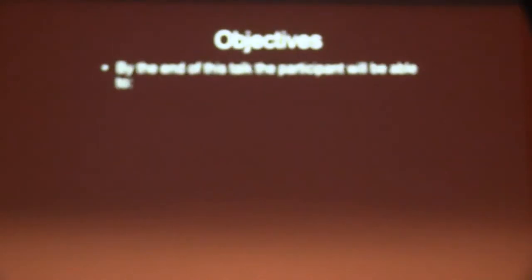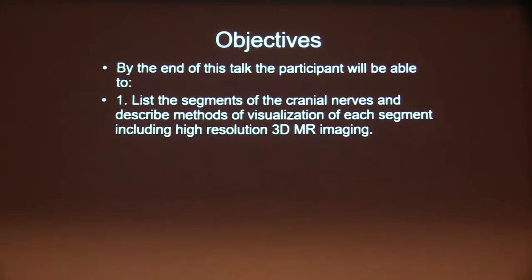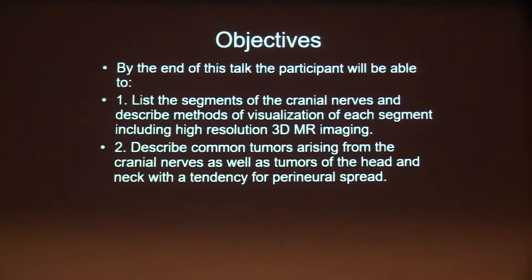By the end of the lecture, I'd like you to be able to describe the segments of the cranial nerves, the different portions of the cranial nerves on MRI imaging. I'll be talking about our segmental nomenclature, our naming system for the cranial nerves, which helps conceptually organize our approach to imaging of the different portions of the cranial nerves and optimizes the extent to which we can see most of the nerves, the entirety of the nerves.